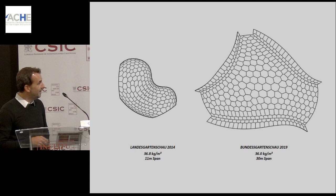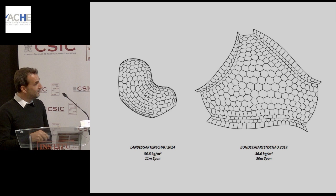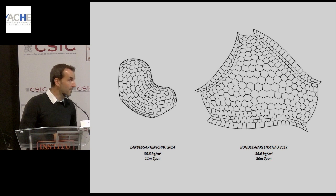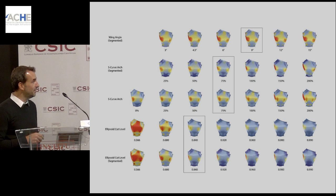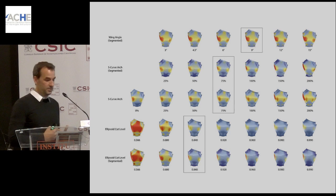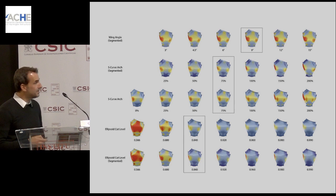We achieved that. The Landesgartenschau 2014 had an 11-meter span at 36.8 kg/m². The Bundesgartenschau has a 30-meter span and weighs 36 kg/m² — slightly less material, three times the span, six times the covered area. This was possible because we refined our agent system significantly so that it now has direct structural feedback, through interaction with colleague Jan Knippers. One of the main aspects is that we no longer work with solid plates.